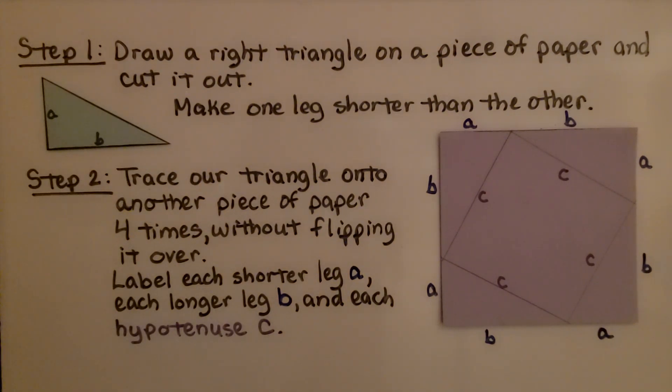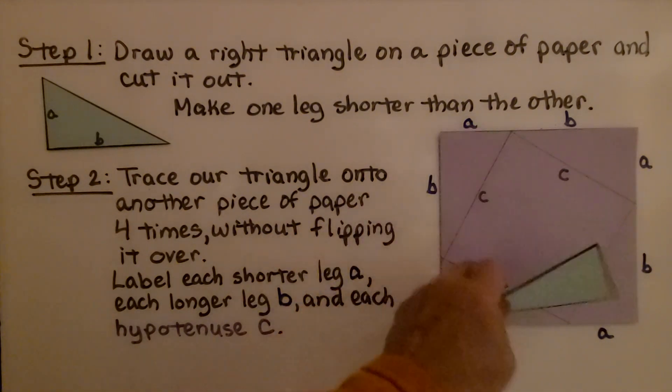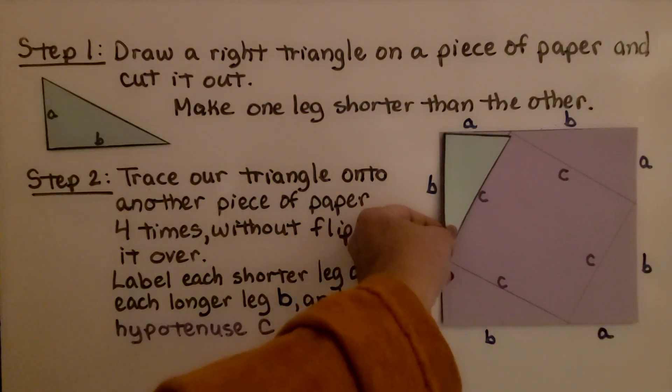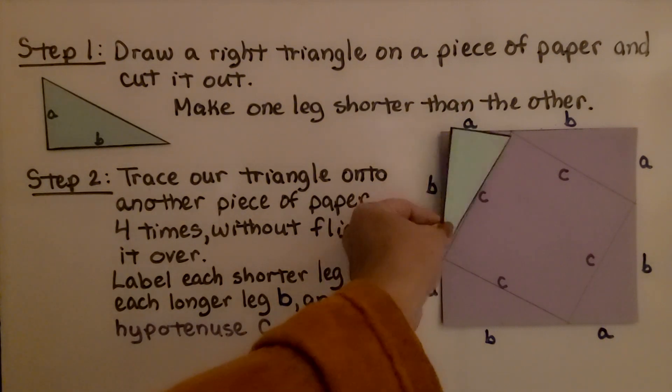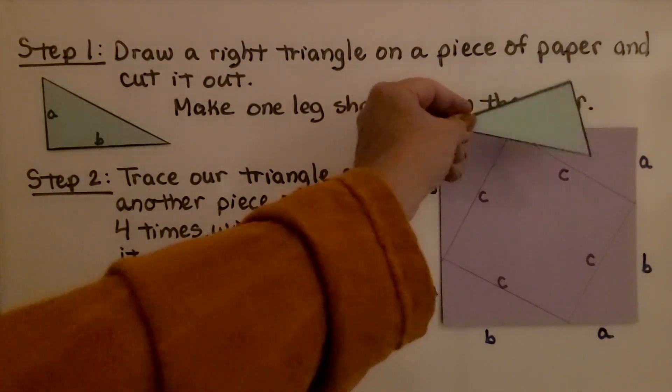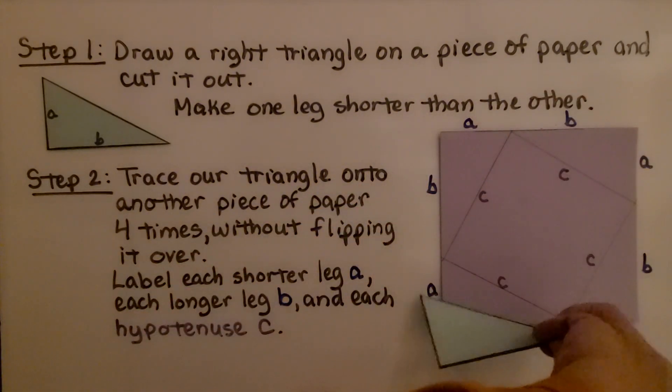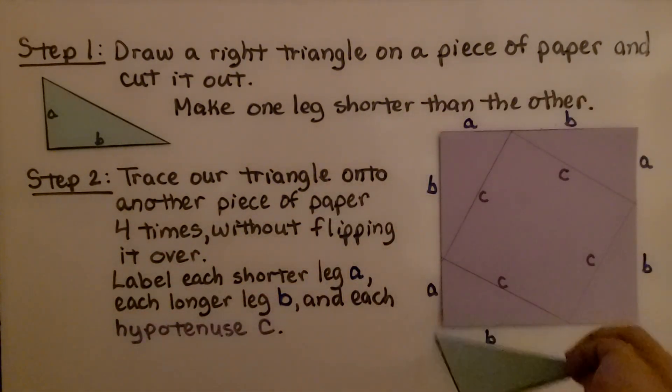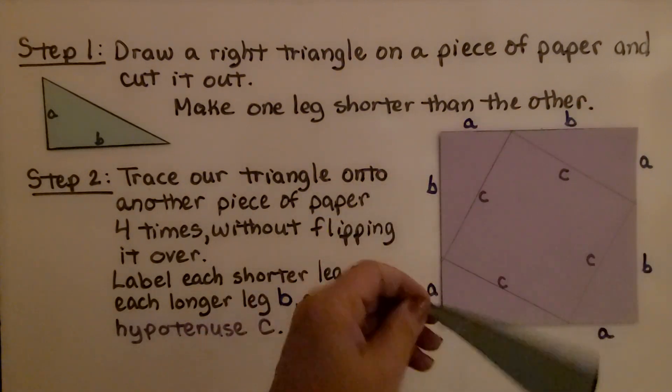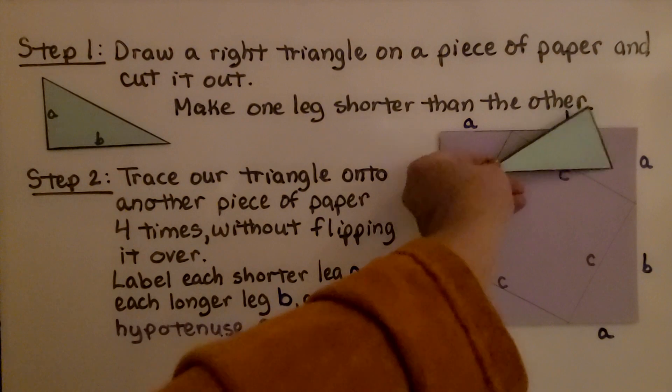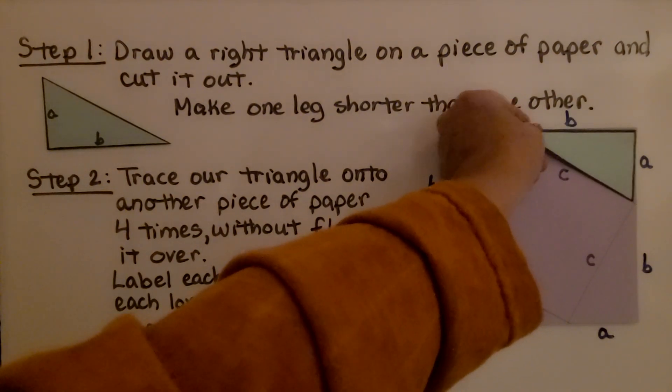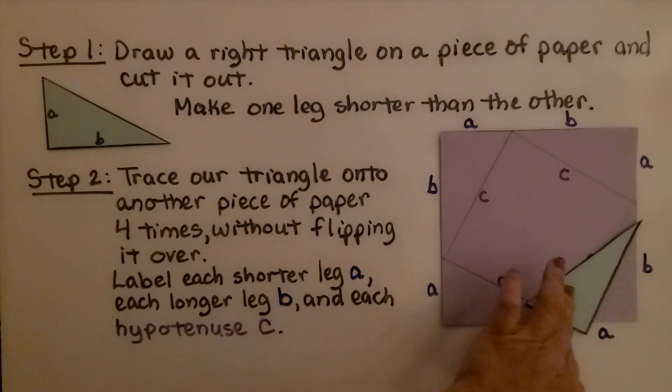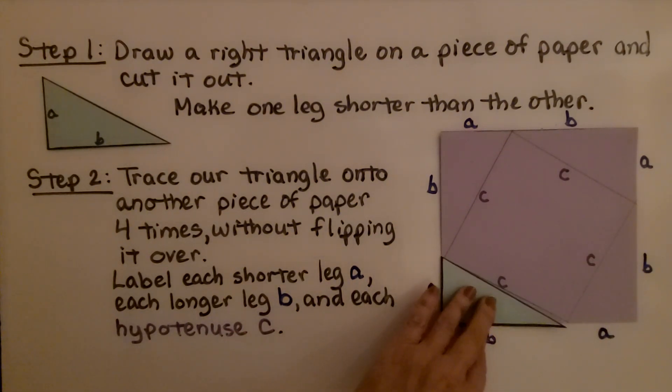Step two, we trace our triangle onto another piece of paper like this and we do it four times. We put it up in the corner and trace it and draw our hypotenuse, the long side, and we're going to rotate this triangle around slowly tracing it. It's doing a rotation and we're not going to flip it over. We're going to keep it like this and rotate it, trace it, rotate it, trace it, and then rotate it, trace it one more time. And we're going to end up with a square in the middle.